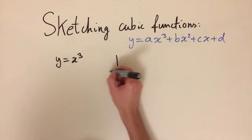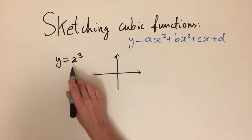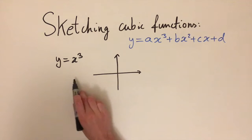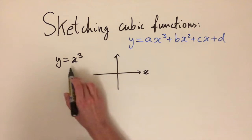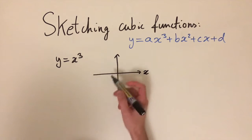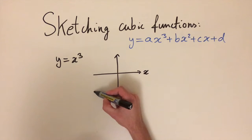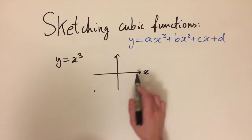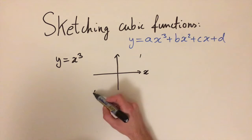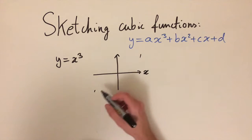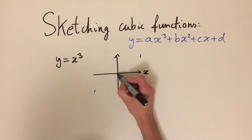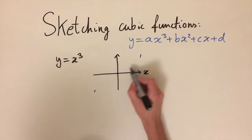Let's quickly sketch what this looks like. If x is really big and negative, very far on the left side of the scale, then y is also going to be negative, because when you multiply a negative by itself three times you also get a negative, and it's going to be even bigger. If x is positive and really big then y is also going to be positive and even bigger. We know that at x equals zero, y is equal to zero, so it goes through the origin.